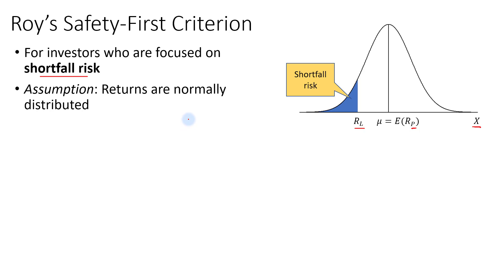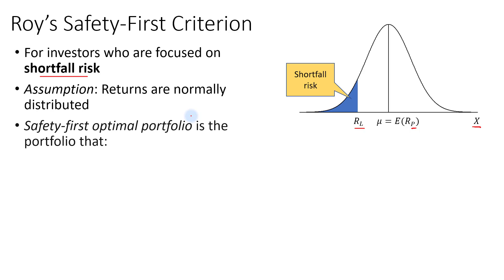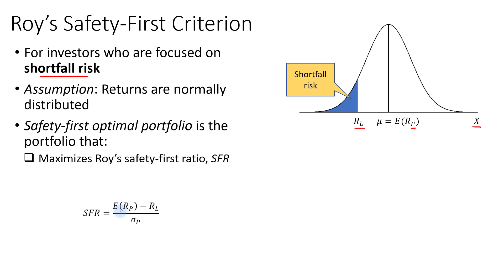For the investor, how do they find the portfolio with the lowest shortfall risk? That portfolio is called the safety first optimal portfolio, and it maximizes Roy's Safety First Ratio, which we denote as SFR. The formula for Roy's Safety First Ratio is the expected return on the portfolio minus the minimum acceptable return, divided by the standard deviation of the portfolio.